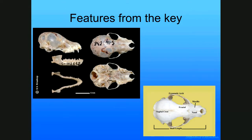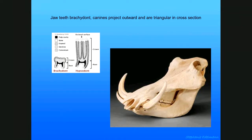One of the skulls we usually have is a bat. A characteristic feature of the bat is this little U-shaped indentation in the front — I'm assuming that's related to echolocation. Another question I often get involves Key B, which at some point mentions 'brachydont canines project outward in a triangular cross section.' That's referring to a wild boar — we don't have one. Brachydont means short stubby teeth with a deep root and a small crown, which is how our teeth are. That's compared to hypsodont teeth, which have a very big crown — horses have that kind.